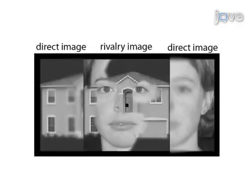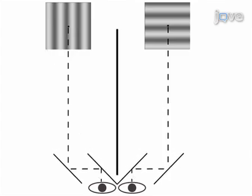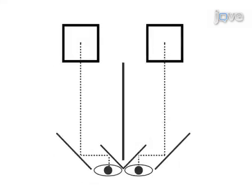An additional problem that may occur is that each eye might see the image it is supposed to see twice: once through the mirror and once again directly. This will cause an additional image of each stimulus to appear next to the location where rivalry occurs. To avoid this, adjust the relation between the image's location and the observer's distance from the screen. In order to make these adjustments before the experiment begins, prepare an image showing only the parts of the display that are identical in both images, and use it to set the stereoscope up for each observer before displaying the rivalry stimulus.